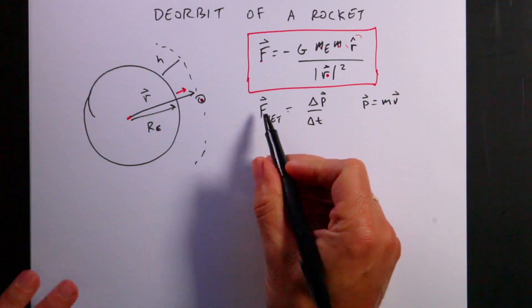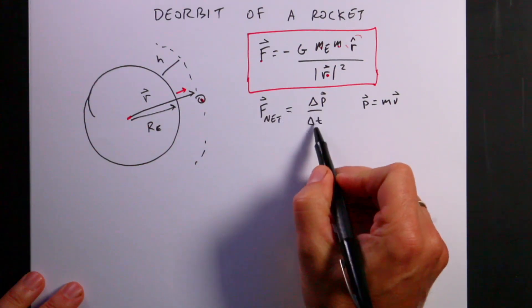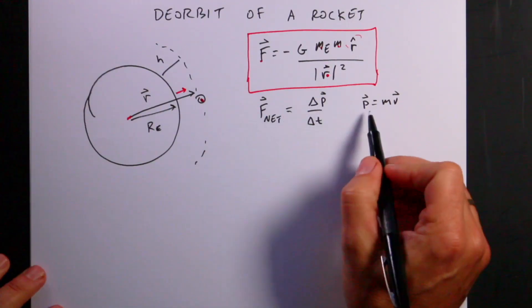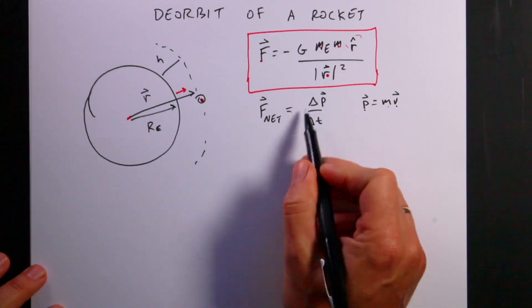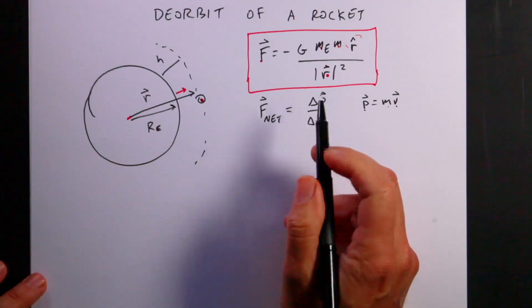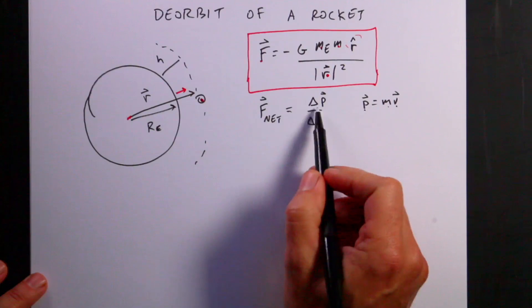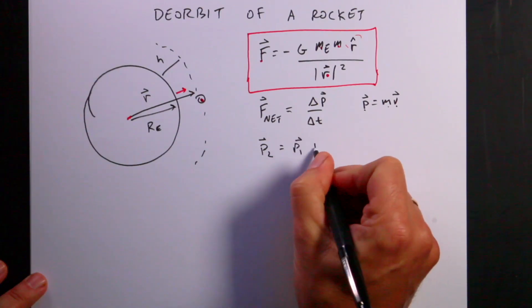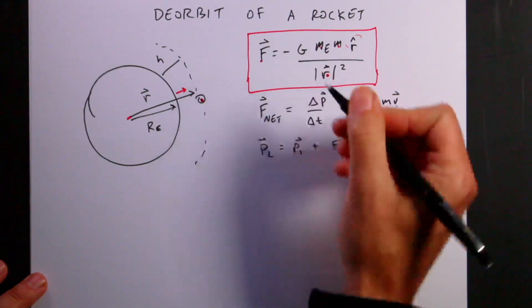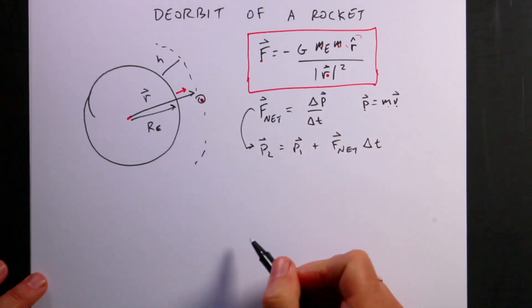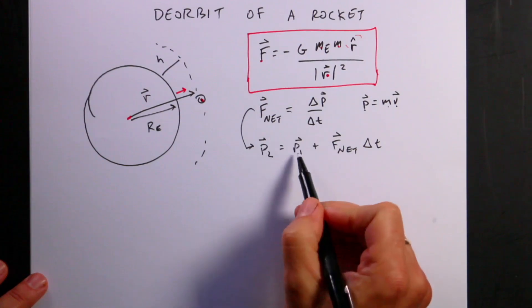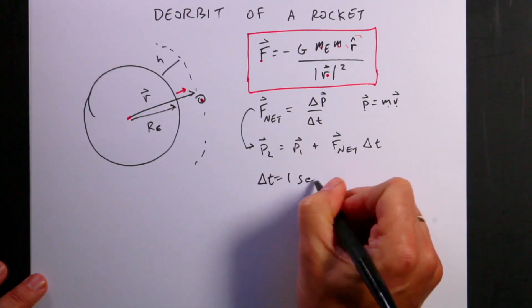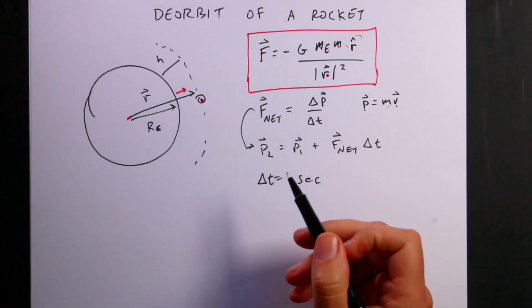The momentum principle says the net force on an object equals its change in momentum over a time interval. Momentum is mass times velocity. Over a short time interval, assuming the force is constant, P2 equals P1 plus the net force times delta T. I'm going to use delta T equals one second.